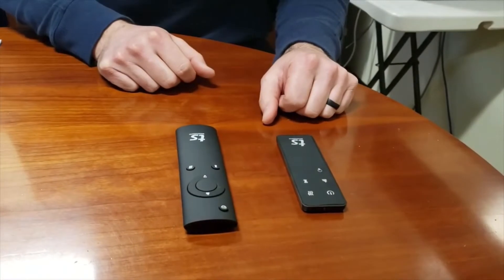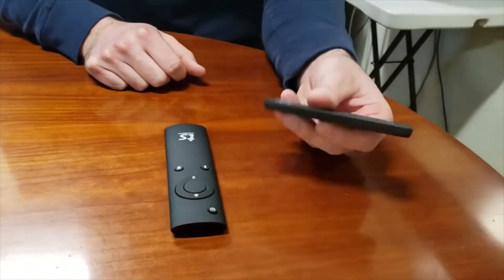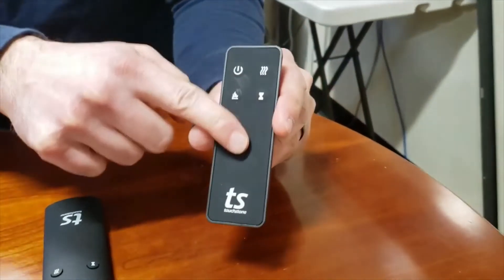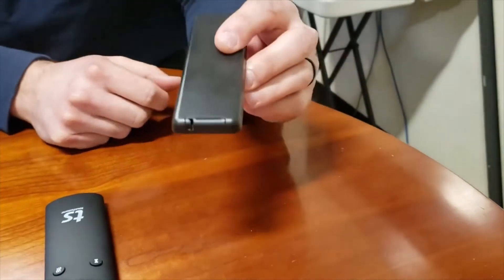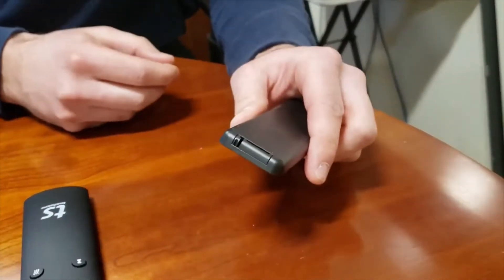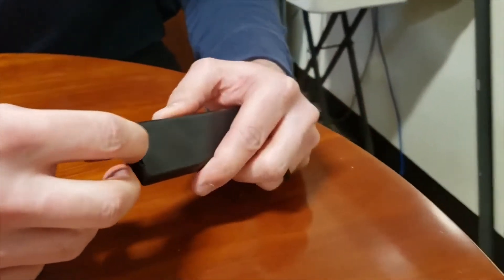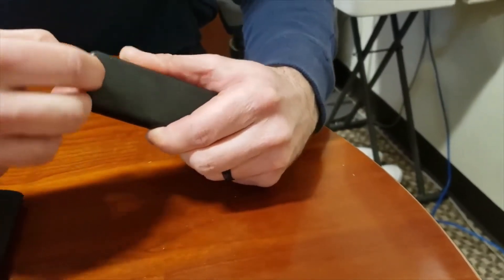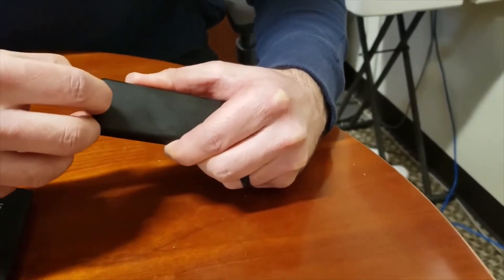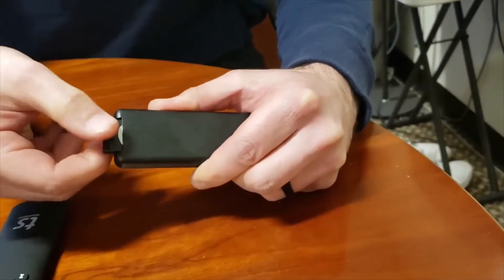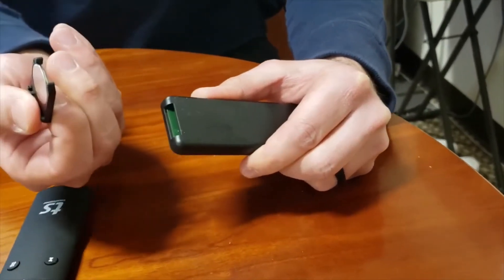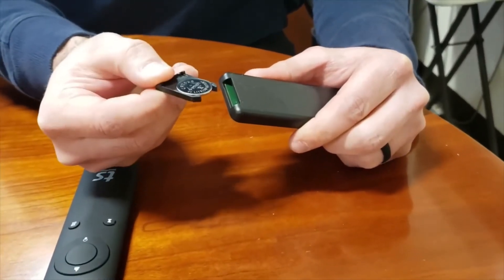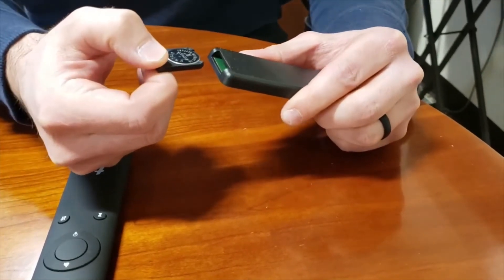I'll start with the flat version here. Your button layout may be different depending on what unit you have, but basically what you're going to want to do is pinch this left corner and it should slide out for you like that. You'll have access to the battery. This is a CR 2025 battery in this remote.